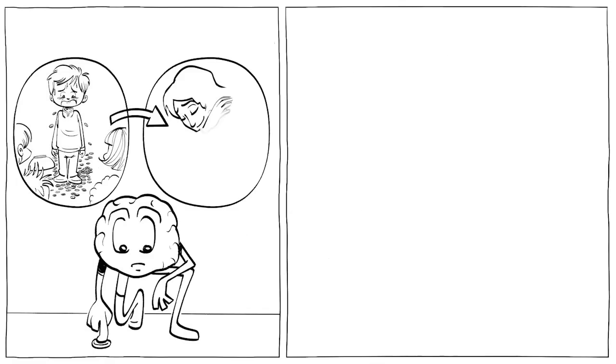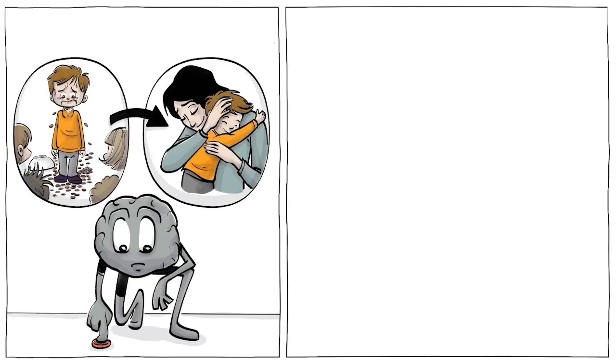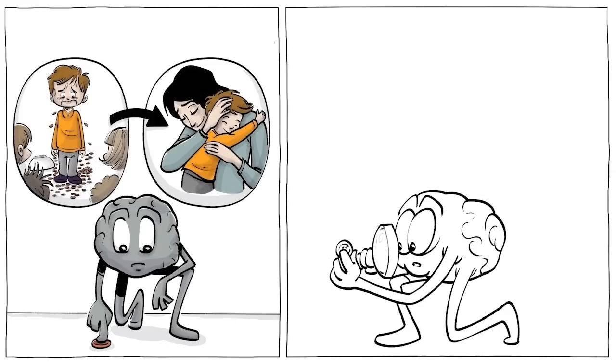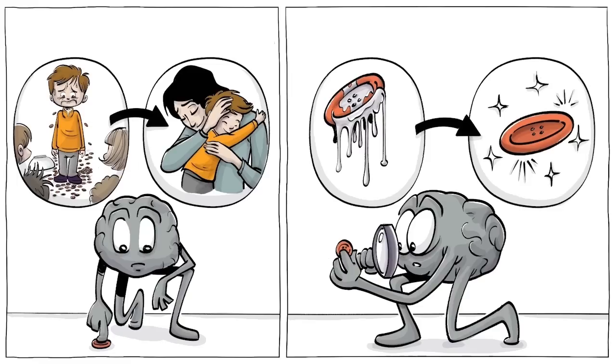The first treatment changed the mind's expectations of what harmless buttons may trigger—classical conditioning. The second therapy changed the mind's evaluation of buttons themselves, that they aren't actually that disgusting. In technical terms, expectancy learning failed but evaluative learning succeeded.